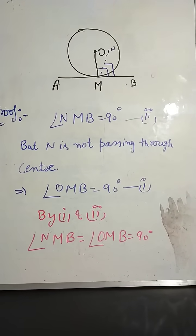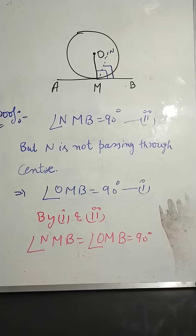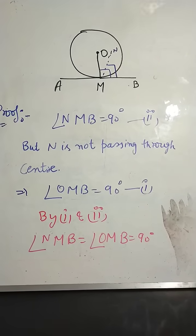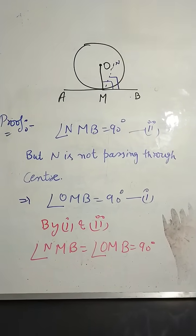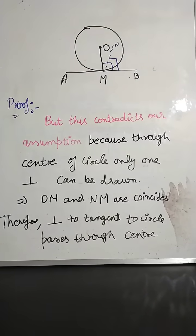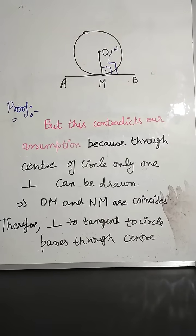So OMB angle 90 degrees first equation, NMB angle 90 degrees second equation. By comparing both, we know both are equal to 90 degrees. But this contradicts our assumption because through center of circle only one perpendicular can pass.